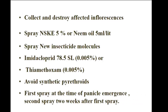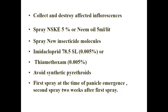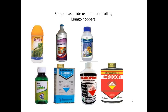Management of mango hopper: go for resistant varieties like Banganapalli, Chinnarasam, and Alphonso; avoid close planting. Practice good orchard management — keep the orchard clean, regular ploughing, removal of weeds, and pruning of overcrowded branches in December to reduce population. Collect and destroy affected inflorescence. Spray NSKE 5% or neem oil 5 ml/liter. Recommended insecticides include imidacloprid, thiamethoxam, buprofezin, and monocrotophos or malathion. Avoid synthetic pyrethroids; alternatively use lambda-cyhalothrin.